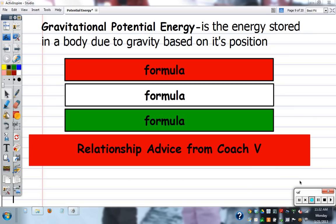All right, so here's your first vocab word. Gravitational potential energy is the energy stored in a body due to gravity based on its position. So it is energy stored due to gravity based on its position. So it's kind of three things.